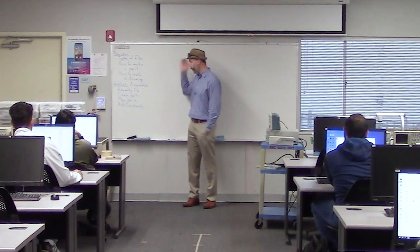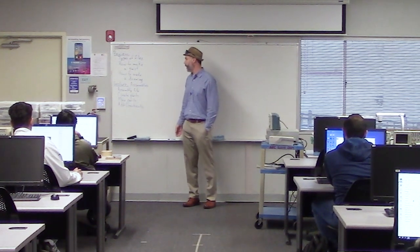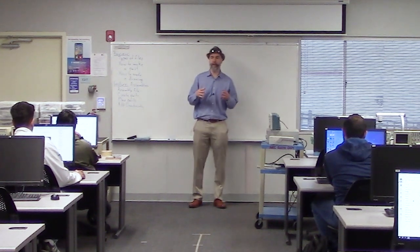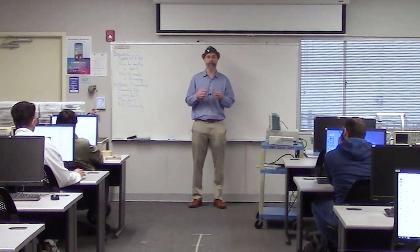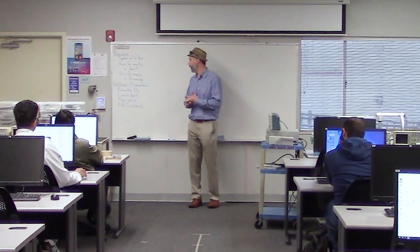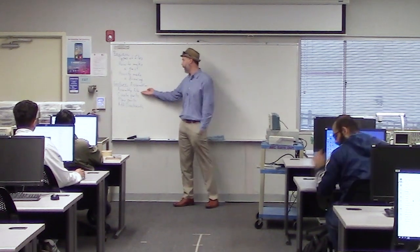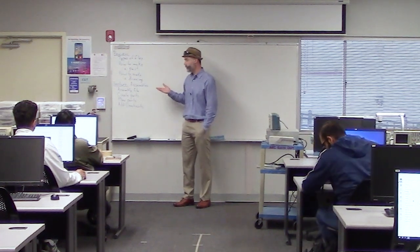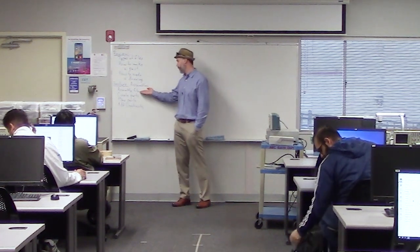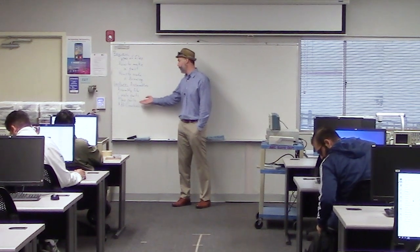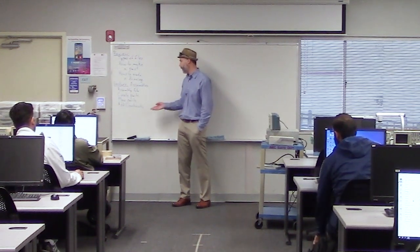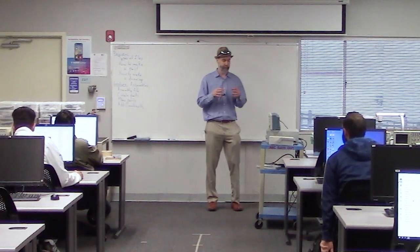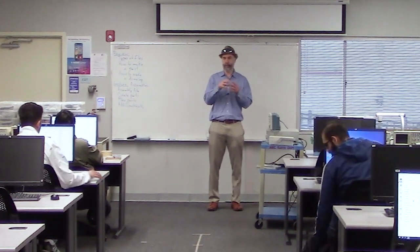We'll go on to our main topic for today, which will be a lecture about assemblies. An assembly is a combination of different parts put together in Inventor. We'll talk about an assembly file. The way that you make an assembly is you start with an assembly file, you create parts, you place the parts into your assembly, and then you add constraints — rules about how those parts stick together.